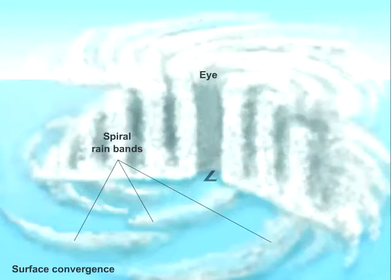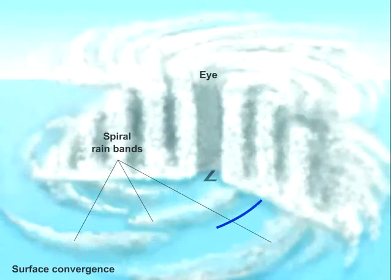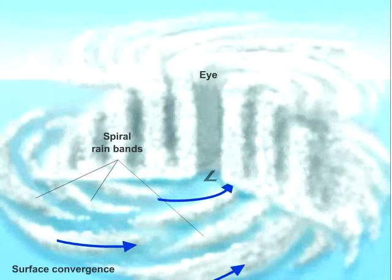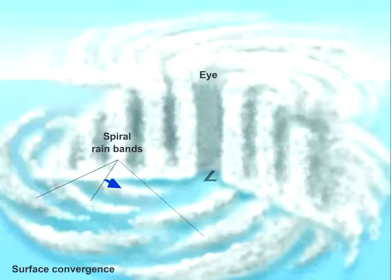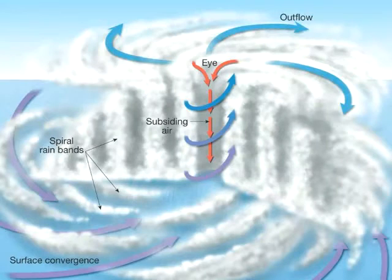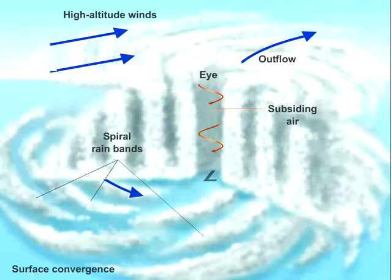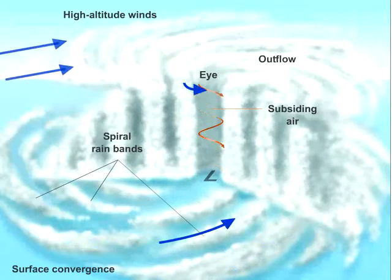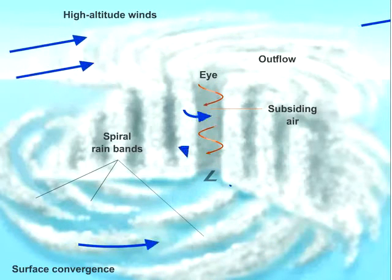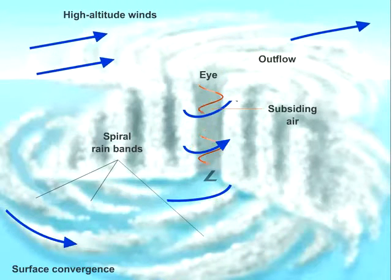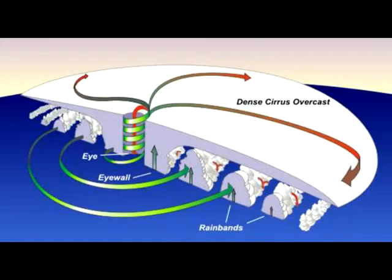The hurricane profile shows that a steep pressure gradient generates rapid inward spiraling winds. Wind speeds increase towards the center, which can be explained by the conservation of angular momentum. Towards the core of the storm, the air turns upward and ascends in a ring of cumulonimbus towers called the eye wall. This is where we find the greatest wind speed and the heaviest rainfall. The center of the storm itself, called the eye of the hurricane, is characterized by descending air, warming temperatures, low wind speeds, and no rain.